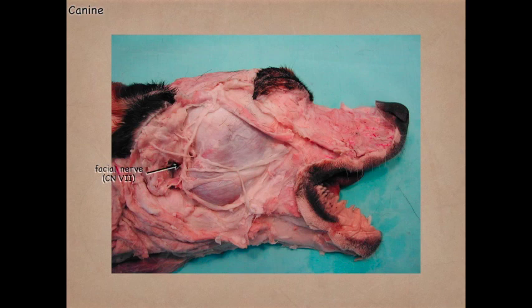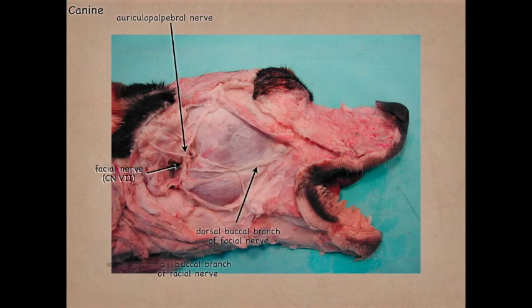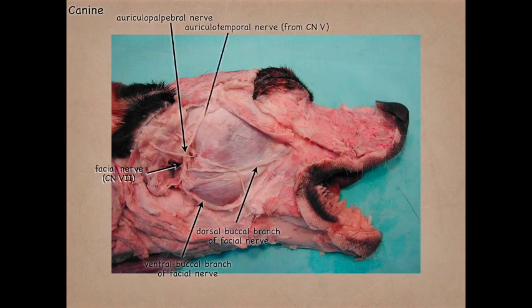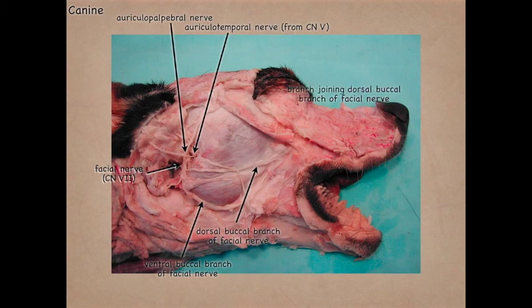Here is the facial nerve, the auriculopalpebral nerve coming off it, the dorsal buccal branch of the facial nerve, and the ventral buccal branch. In the bovine, that ventral buccal branch courses more ventrally. The auriculotemporal nerve is usually a little deeper and more rostral to the auriculopalpebral nerve, and we see it here giving a branch that joins the dorsal buccal nerve — this also occurs in the horse and in the ox. And there's the parotid duct.